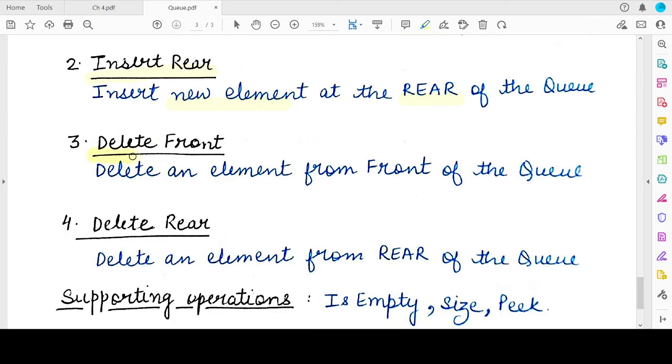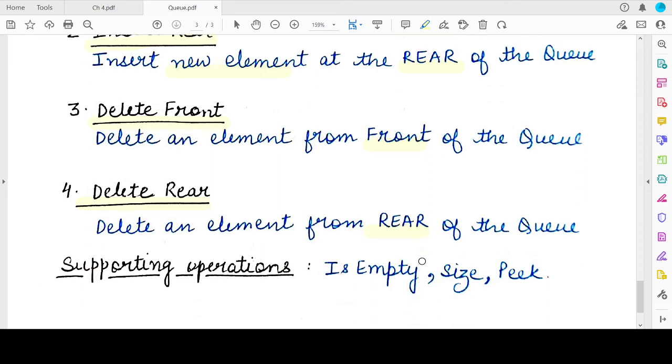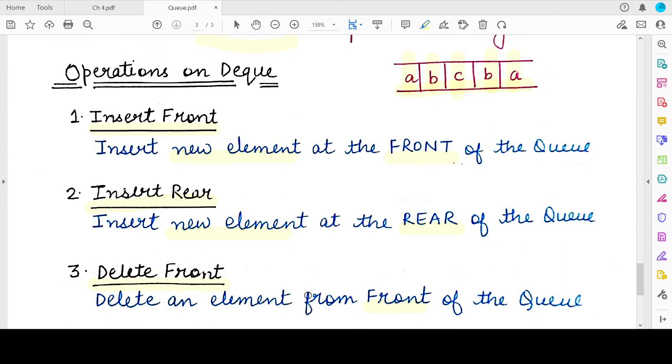Then we have the two variations for the delete operation. Delete front will remove an element from the front whereas delete rear will remove the element from the back of the queue. And other supporting operations also exist. You can define them just like you have defined for a normal queue. These supporting operations are is empty, which will let you check whether the deque is empty or not. And if it is empty, you cannot perform any deletion operation. If it is full, you cannot perform any insertion operation. Similarly, you can check the size of the deque, you can check which element is present at the front of the deque and so on. So these were the operations which are very similar to the operations of a queue.